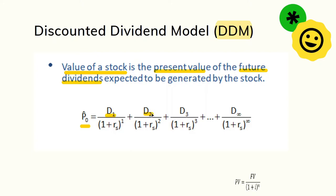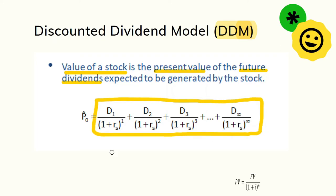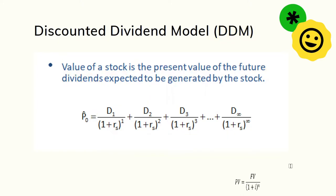In equation form, P subscript zero is the fundamental value or the present value of future dividends. The numerators are dividends in year one, year two, year three, and so on into infinity. These future cash flows are discounted to the present using the rate of returns on common stock, r_s. The right-hand side of this equation represents the sum of present values of future dividends, equivalent to the intrinsic value of the stock at time zero.